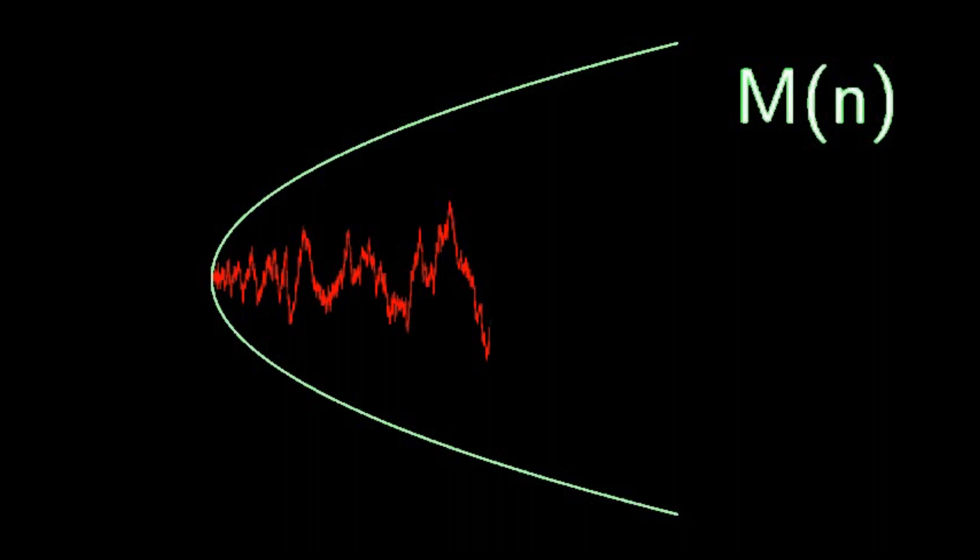We can graph the Mertens function to look for patterns. And at first it looks like there is no pattern at all and this is what we might expect. After all, prime numbers appear random and unpredictable. However, if we look closer, there is actually a pattern. Although the numbers appear random, they appear to be bounded.